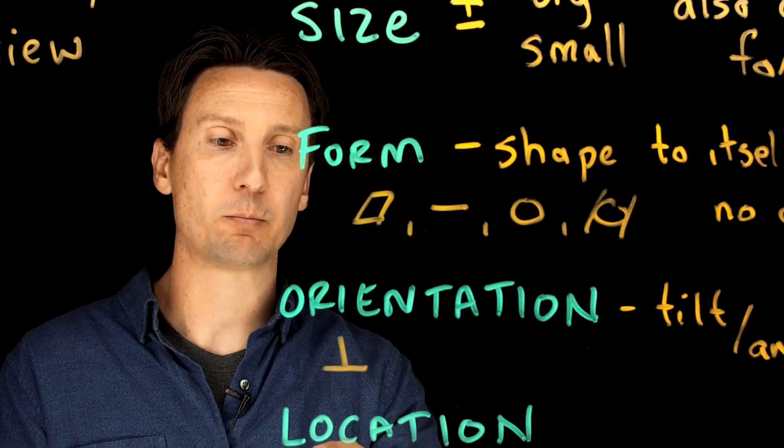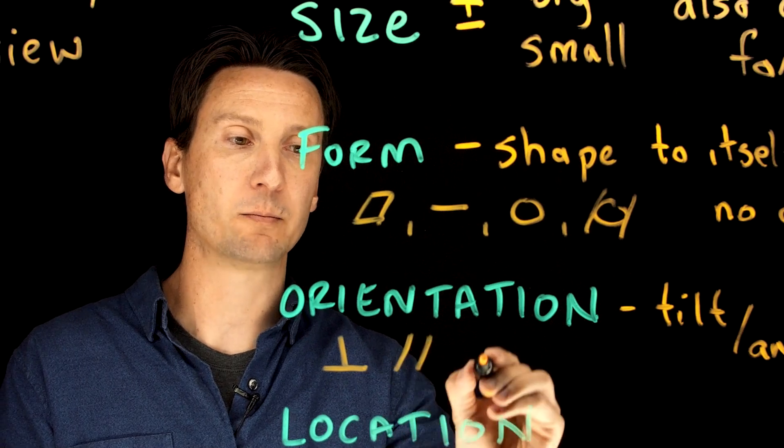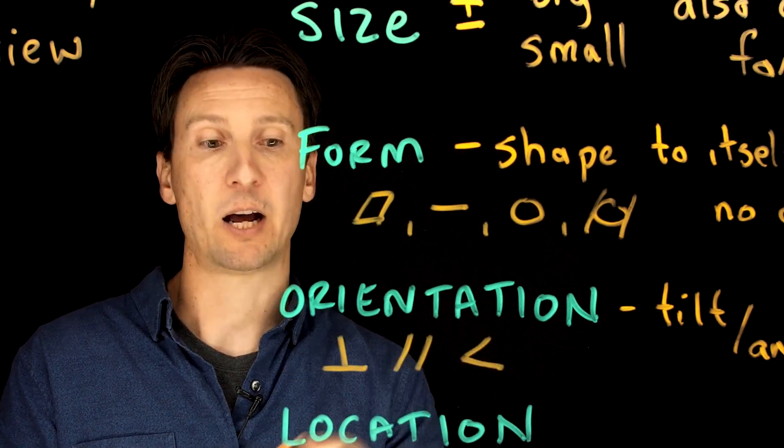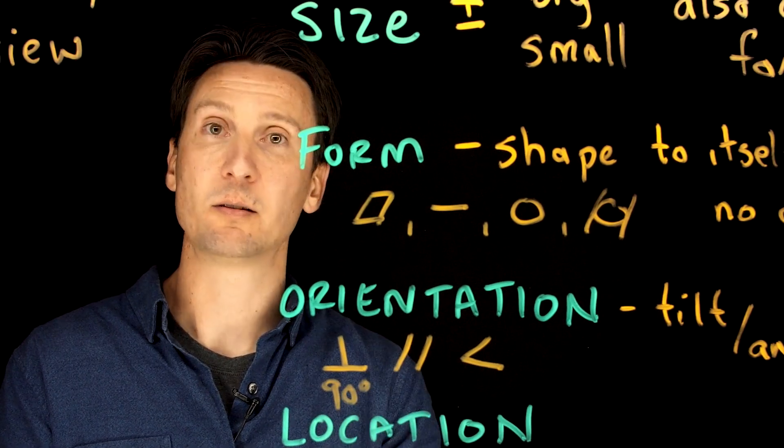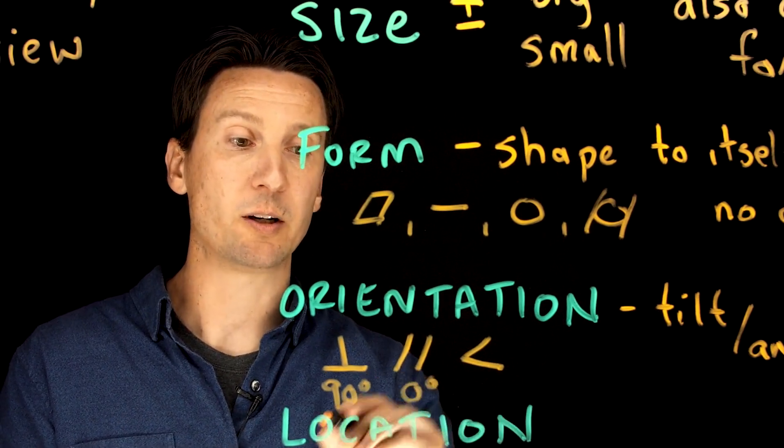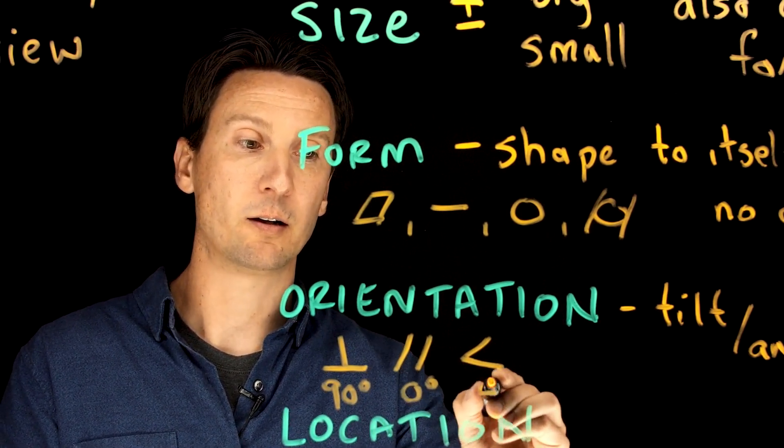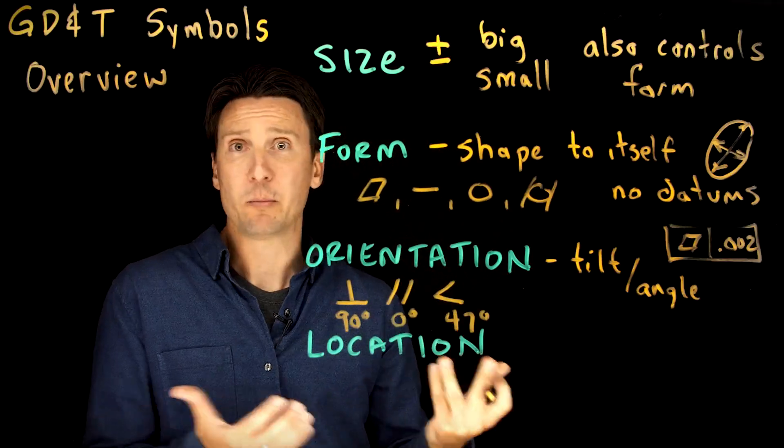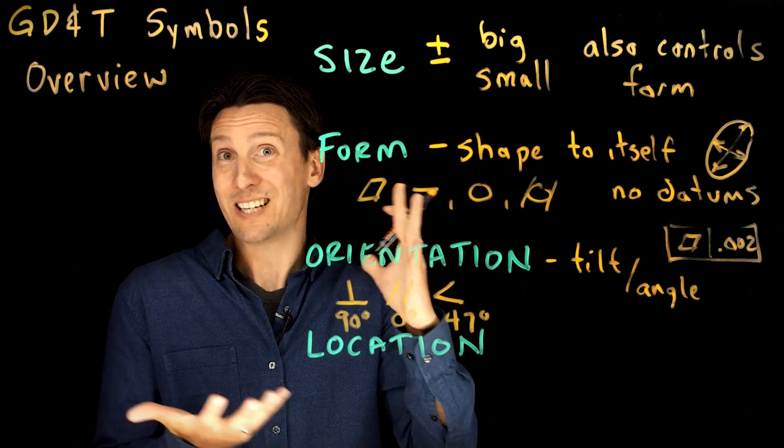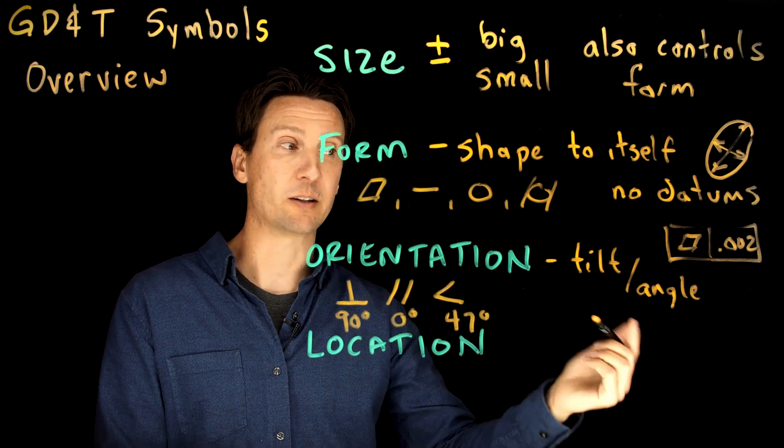We have three symbols there: perpendicularity, parallelism, and angularity. And it's pretty simple. Perpendicularity is used for 90 degrees. Parallelism is used for 0 degrees. And angularity, that's other degrees. But they all mean the same thing. It's just the orientation, tilt, or angle of something relative to a datum.